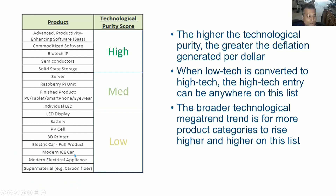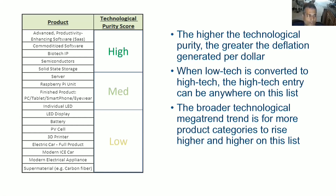Examples of low tech include a modern internal combustion engine car, a modern electrical appliance, or even a super-material like carbon fiber — it's not really high tech yet. Even a photovoltaic cell, while higher tech than other sources of electrical generation, is not a 10%-a-year improving type of thing. So in this zone we are on the border between high tech and low tech, though some of these keep progressing up.